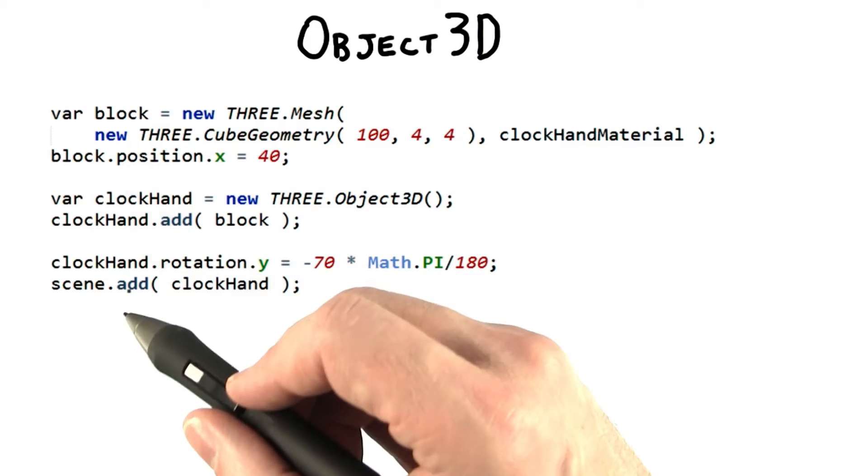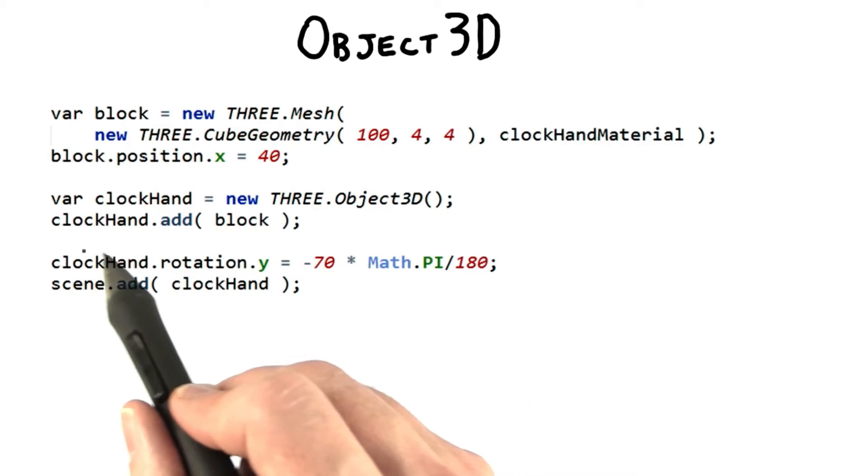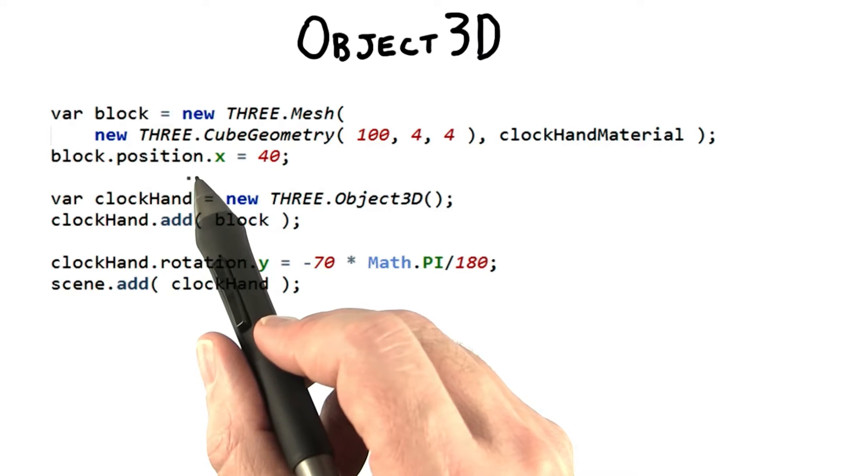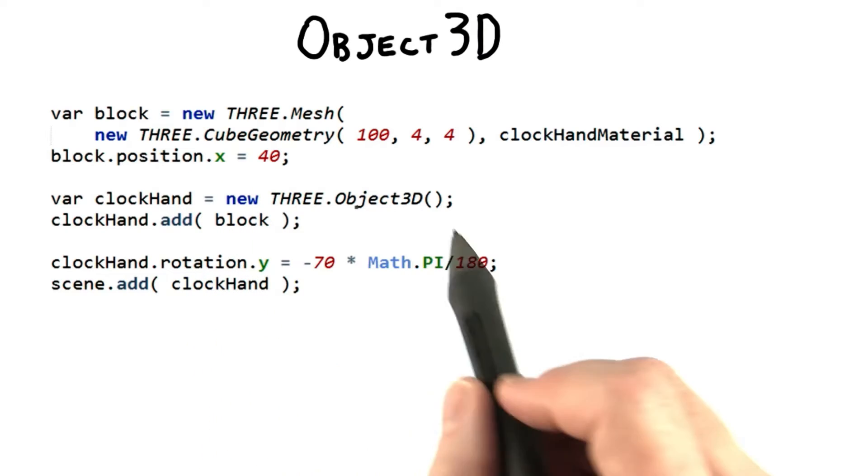Here's the code for how to do this. What is happening here is that the block is nested inside the clock hand object. The translation moves the block so that one end is over the center of the clock face so that the hand will rotate around the clock properly.